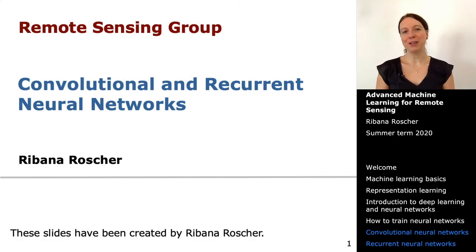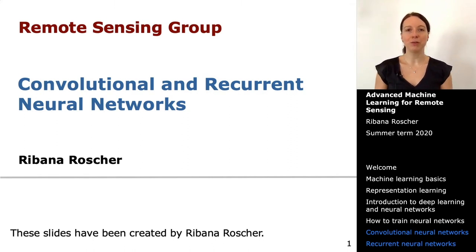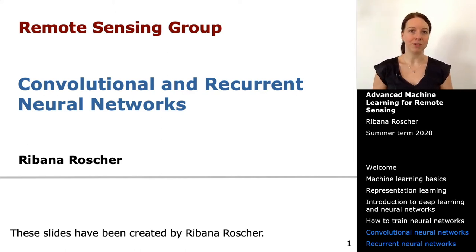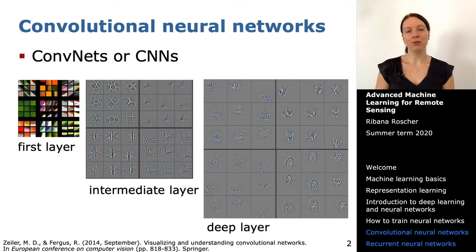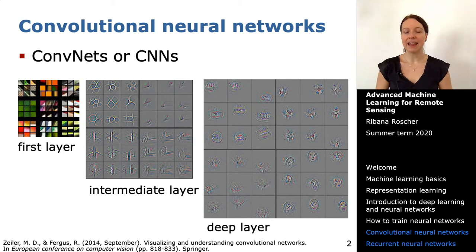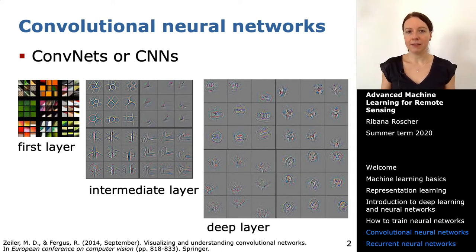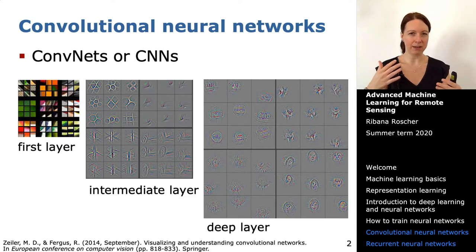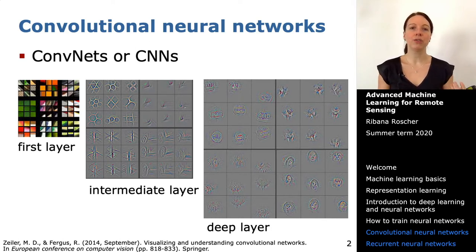Welcome to today's lecture about convolutional and recurrent neural networks. These two types of architectures are the most commonly used nowadays, whether you want to classify images or deal with time series data. Convolutional neural networks are sometimes called ConvNets or CNNs. Illustrated here are feature maps and activations — instead of simple neurons, you use convolutions.